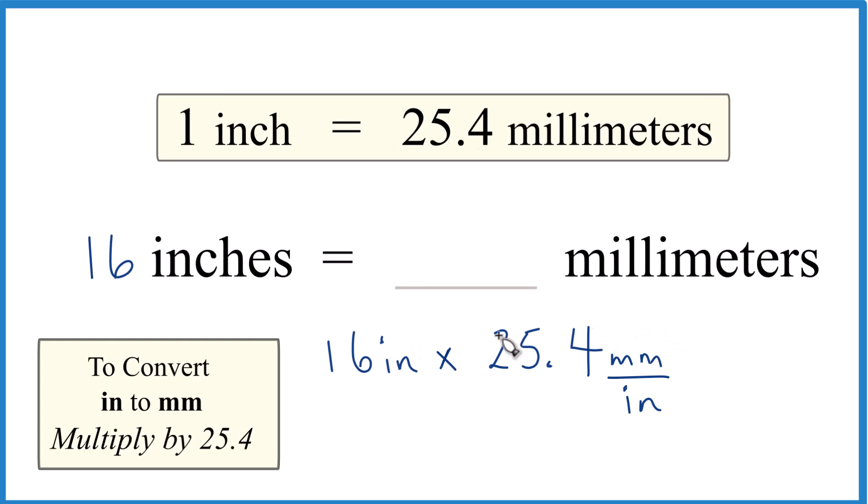Now when we multiply, we have inches on the top and the bottom. They're going to cancel out and that'll leave us with millimeters. So we know we've set it up correctly.